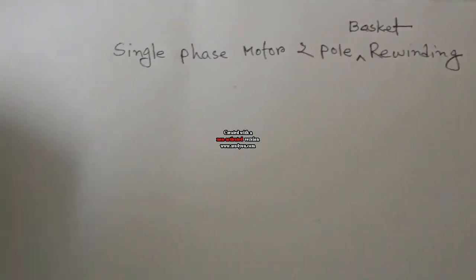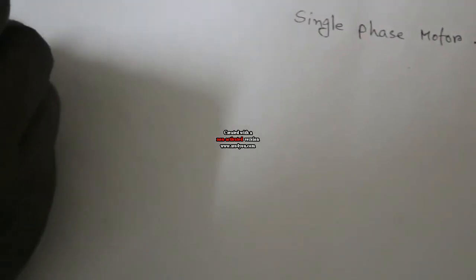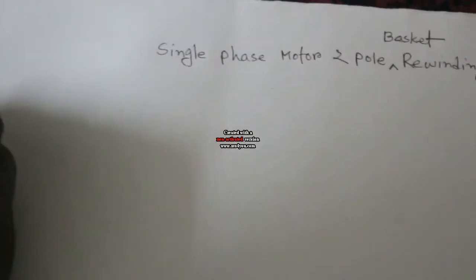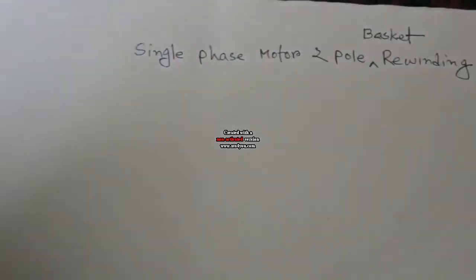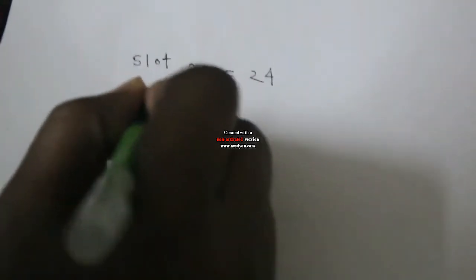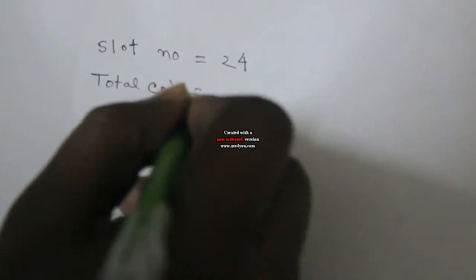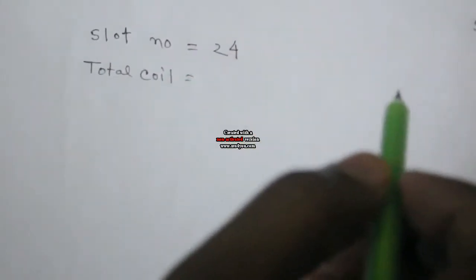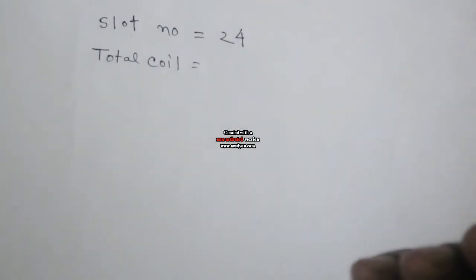First we need to know the slot number. The total slot number is 24. This total coil arrangement is basket style. Basket means single layer.